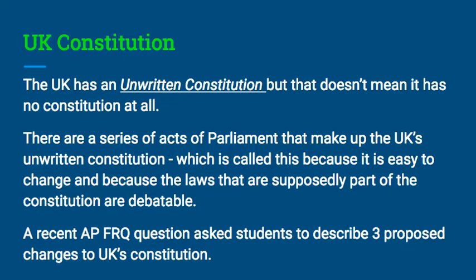Second, the number of members of the House of Lords has been reduced — another constitutional change. There have been other proposed changes: one is the idea of having the UK join the Euro, though that is now moot since the UK voted by referendum to leave the EU. Another proposed change was a referendum on electing parliament members based on proportional representation, which ultimately failed. It's important to understand not only where the UK constitution comes from but what comprises this unwritten constitution and the difference between a formal and an unwritten constitution.